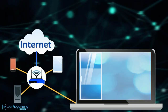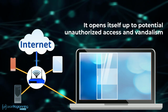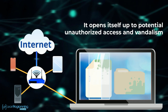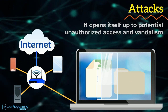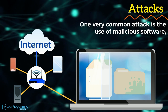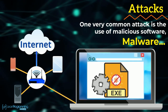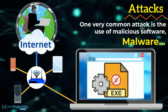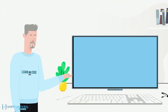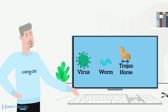When one of our electronic devices is connected to a network of any size, it opens itself up to potential unauthorised access and vandalism, often called attacks. One very common attack is the use of malicious software — malware — that gets placed on the device and then executes on our device or is controlled by some other computer unknowingly to us. These malware attacks include viruses, worms, Trojan horses and spyware.